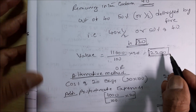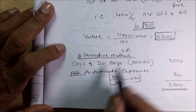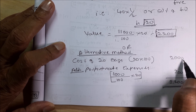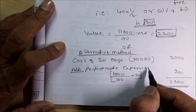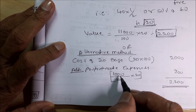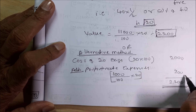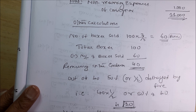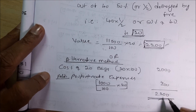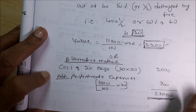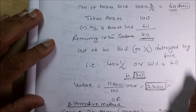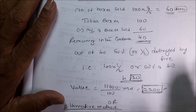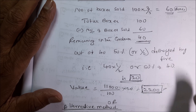Alternative method: Cost of abnormal loss = 20 bags × Rs 100 = Rs 2,000. Add proportionate expenses: for 100 units it is Rs 1,000, so for 20 units = Rs 200. Total = 2,000 + 200 = Rs 2,200. In the first method Rs 2,200, in the second method also Rs 2,200. This is how we work out normal and abnormal loss value in the examination — it may be given for 2 marks or 6 marks.